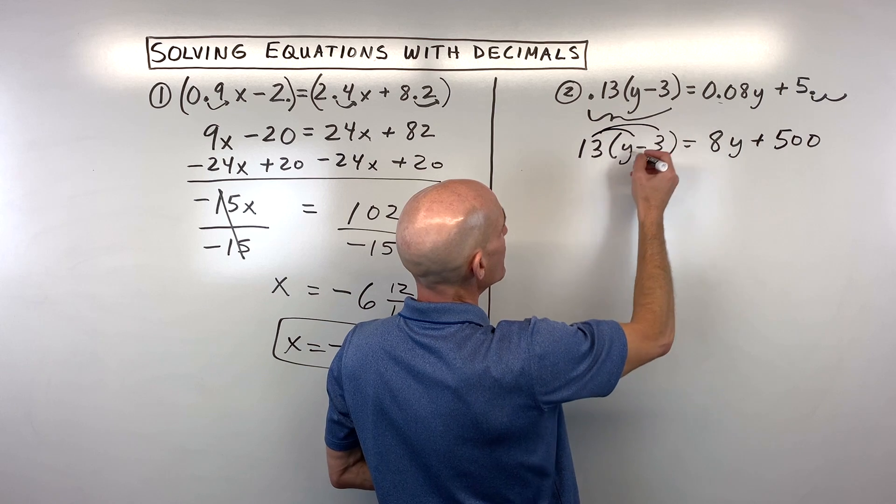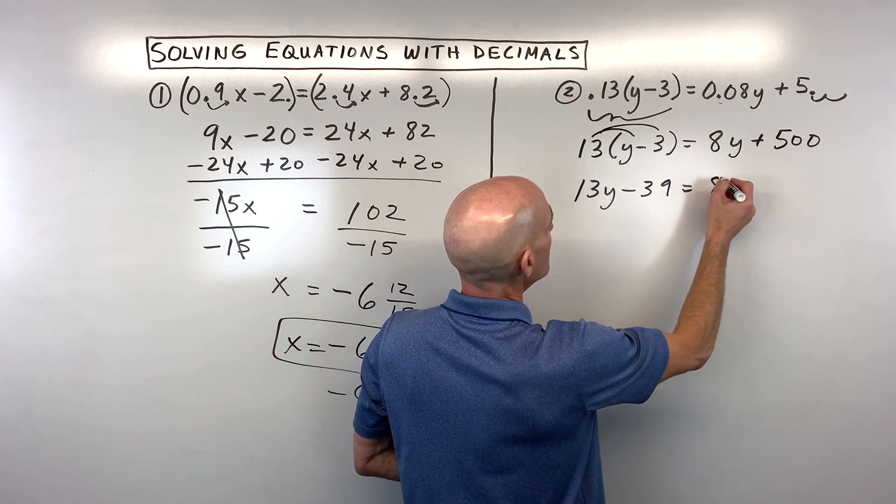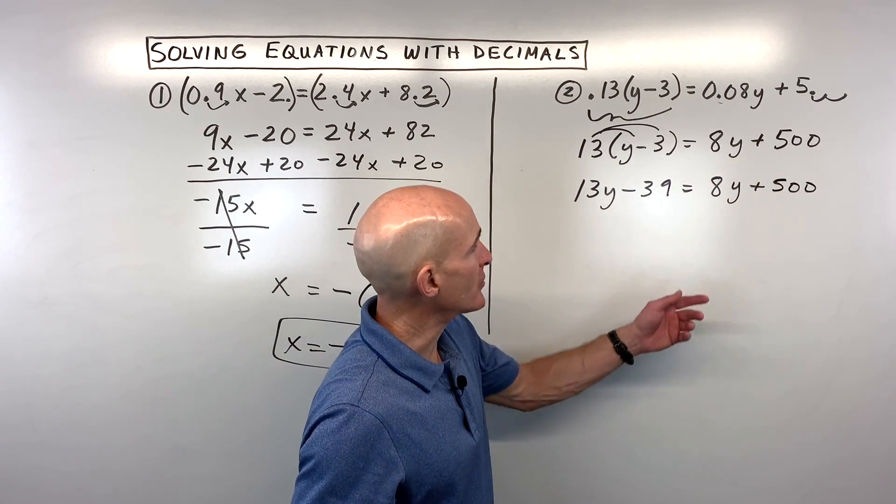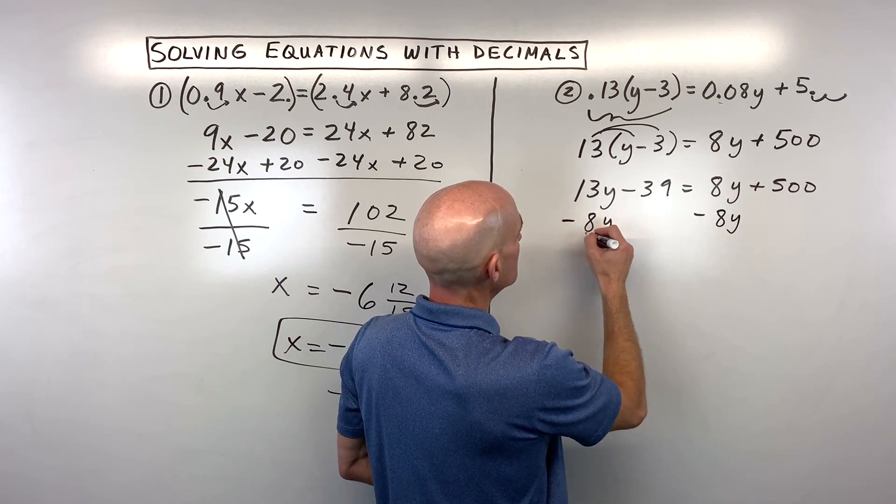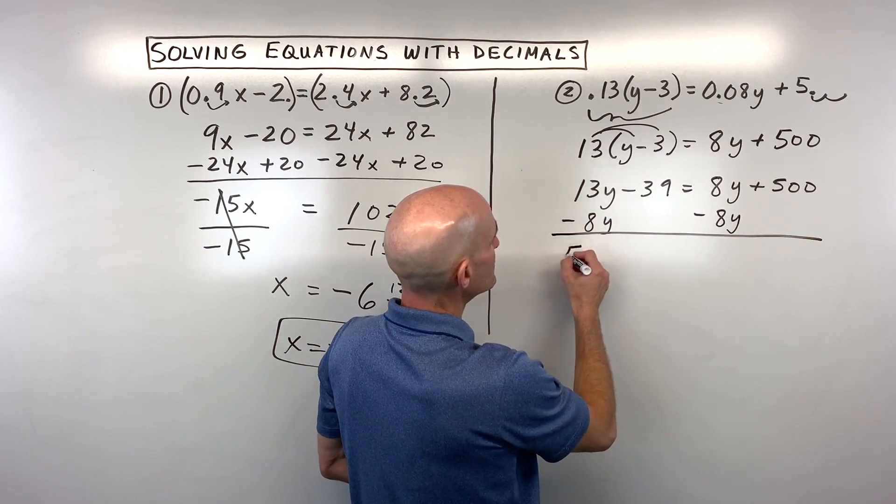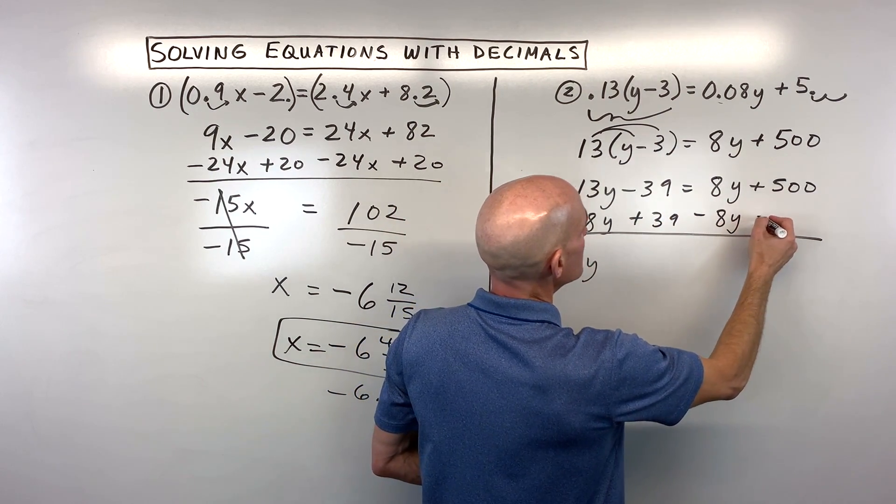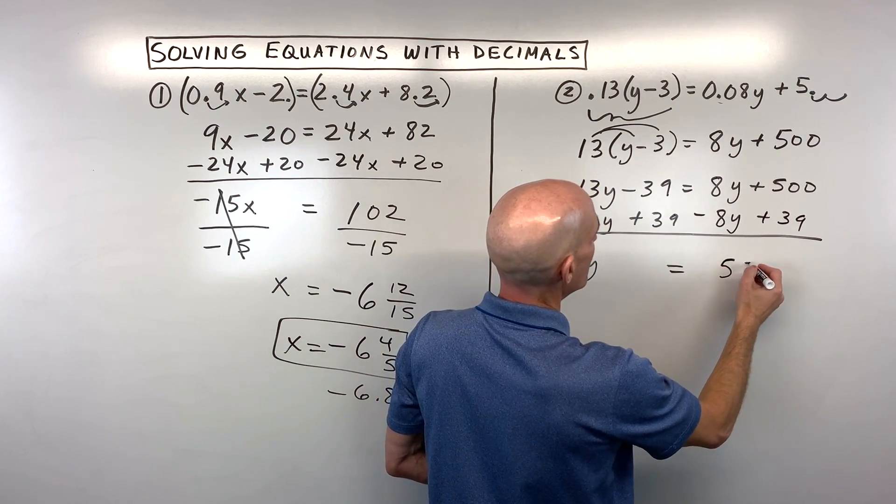Let's go ahead and do our distributive property. That gives us 13y-39. And then we want to get the variables on one side and numbers on the other. So let's go ahead and get the variables on the left by subtracting 8y from both sides. That's going to give us 5y. Then we're going to add 39 to both sides to get the numbers on the right. So that's going to give us 539.